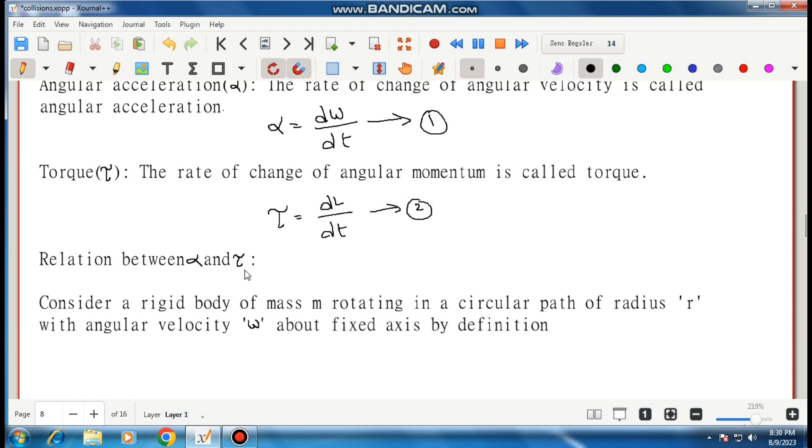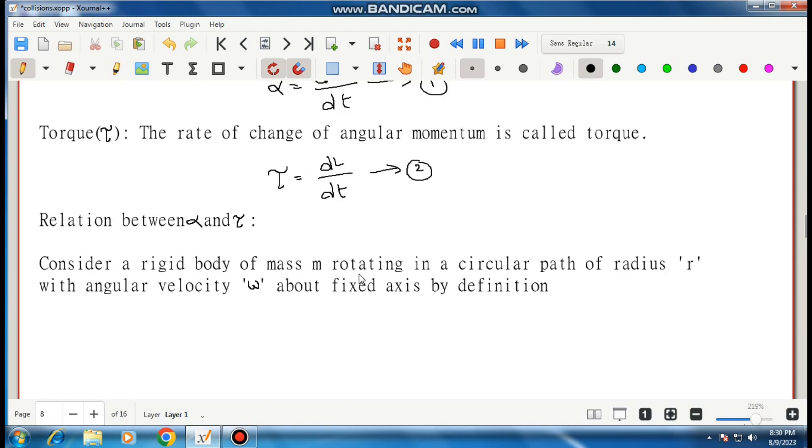Relation between alpha and tau. Consider a rigid body of mass m rotating in a circular path of radius r with angular velocity omega about a fixed axis by definition tau is equal to dL by dt. The formula is.